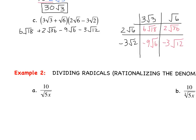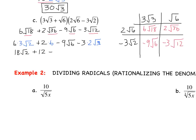Now we simplify all the radicals we can. Root 18 simplifies: 6 times root 18 becomes 6 times 3 root 2, giving 18 root 2. Root 36 is 6, so 2 times 6 is 12. Then minus 9 root 6. Root 12 simplifies to 2 root 3, so minus 3 times 2 root 3 gives minus 6 root 3. Can we combine any terms? We have root 2, root 6, and root 3 — no like terms — so this is our final answer: 18 root 2 plus 12 minus 9 root 6 minus 6 root 3.